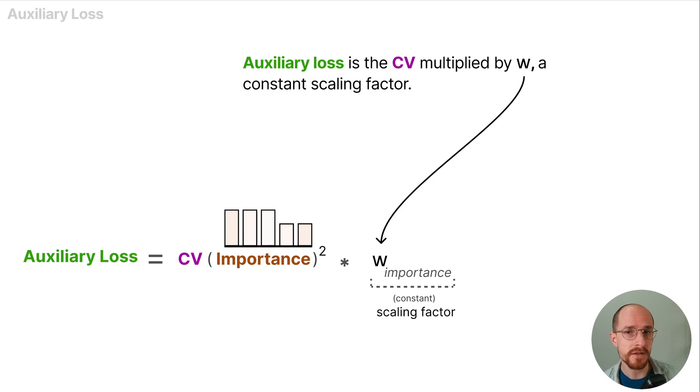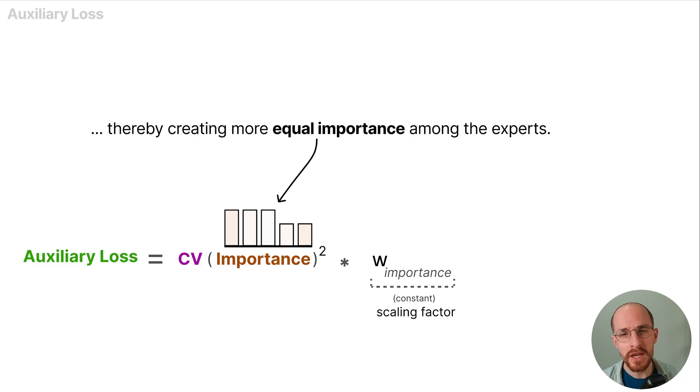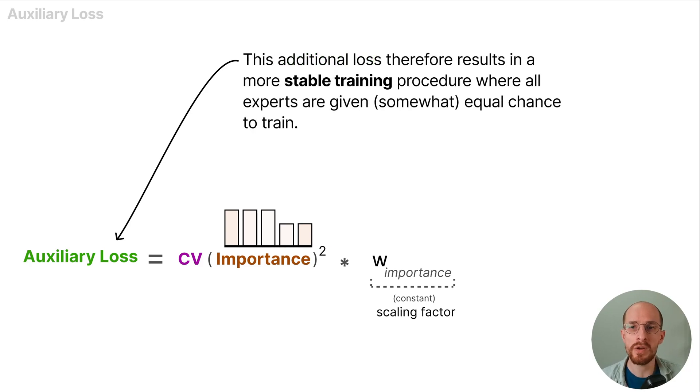Auxiliary loss is the CV multiplied by W, a constant scaling factor. The auxiliary loss is updated during training such that it aims to lower the CV as much as possible, thereby creating more equal importance among the experts. The auxiliary loss is added as a separate loss to optimize during training and this additional loss therefore results in a more stable training procedure where all experts are given somewhat equal chance to train.